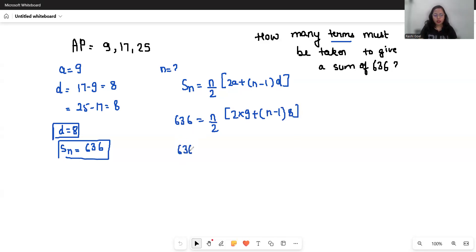So 636 equals n by 2, here 18 plus 8n minus 8. So 636 equals n by 2 times 10 plus 8n.